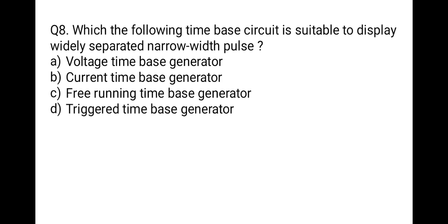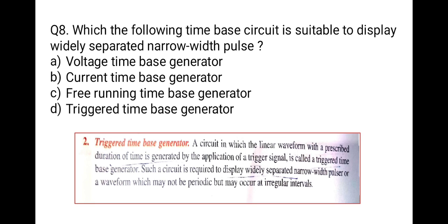The next question: which time-based circuit is suitable to display widely separated narrow-width pulses? The correct option is D: triggered time-based generator. In a triggered time-based generator, a linear waveform with a prescribed duration is generated by application of a trigger signal. Such a circuit is required to display widely separated narrow-width pulses or waveforms that occur at irregular intervals.